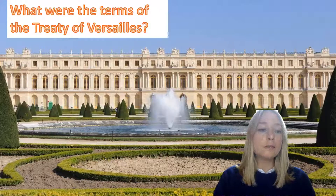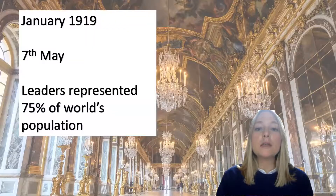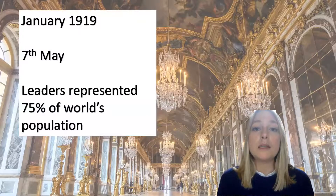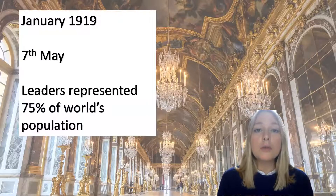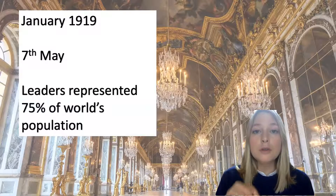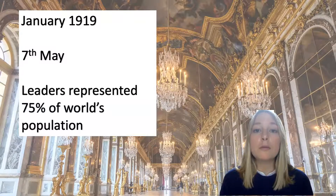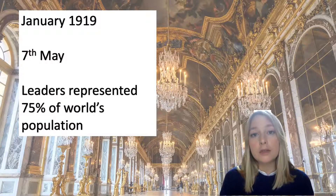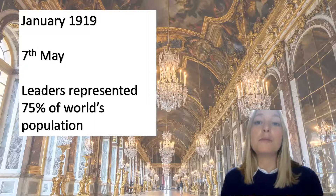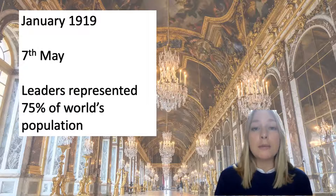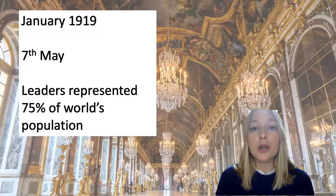The war had ended with an armistice agreement on the 11th of November 1918, and although Germany was on the brink of defeat, the armistice was not a surrender. It was an agreement to stop fighting and withdraw German forces from occupied territory, pending a full peace settlement. A conference to settle the peace terms between the Allied powers and Germany met at the Palace of Versailles outside Paris in January 1919.